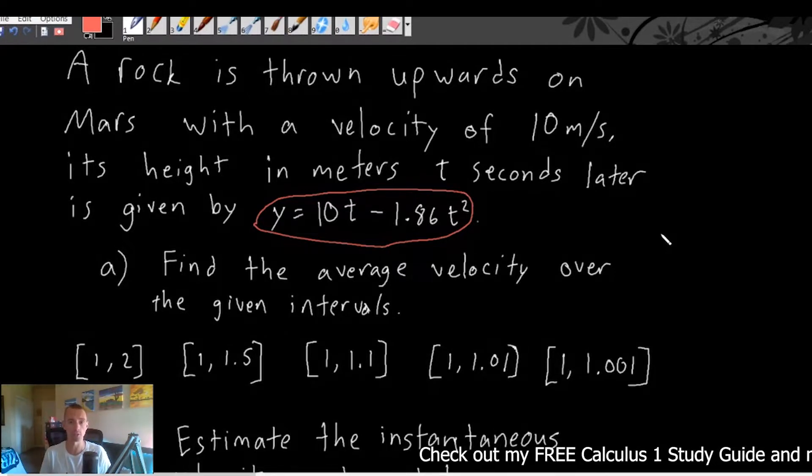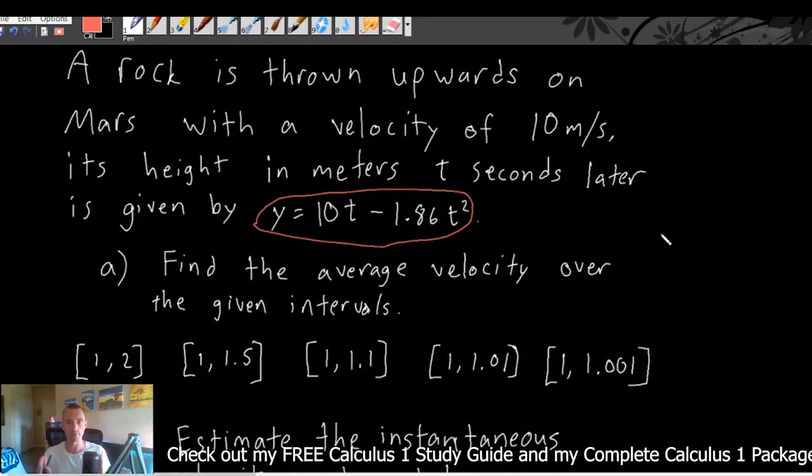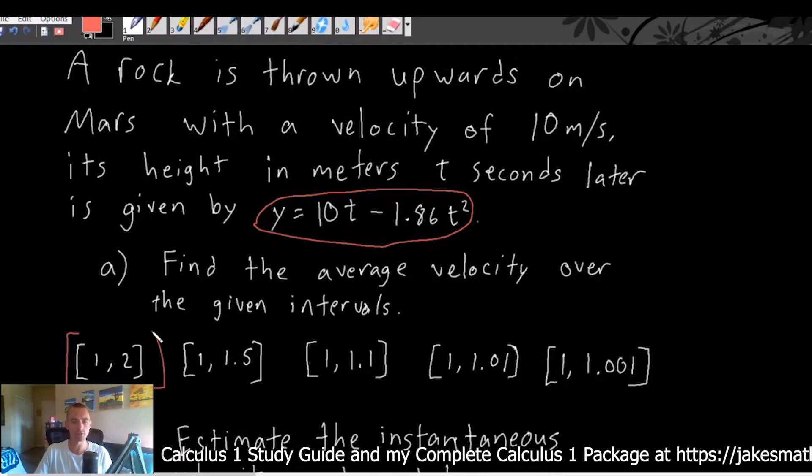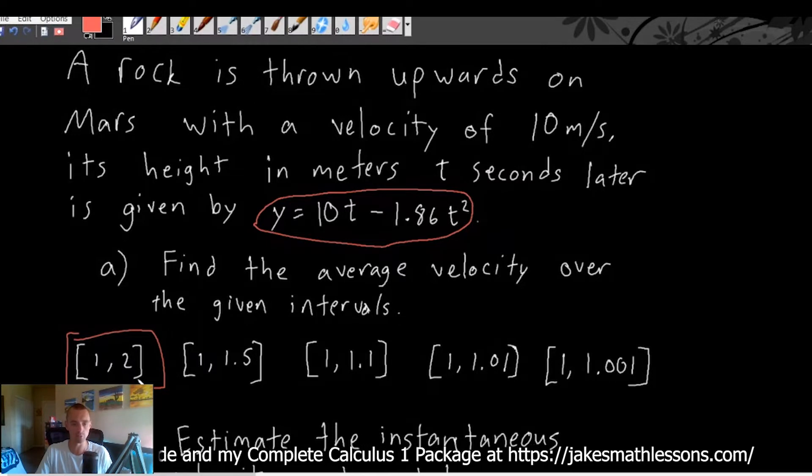So that's a very important distinction. Average velocity is gonna be referring to the average over a given duration of time. So you can see in this case here, we've been given these five different time intervals. We wanna find the average velocity from one second to two seconds.